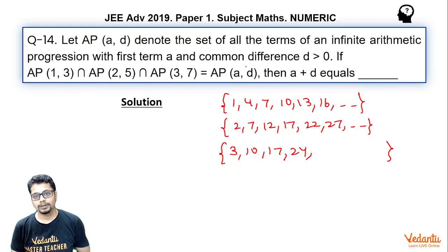Now this D essentially would be LCM of common differences of these three APs which is essentially 3, 5, 7. So LCM of 3, 5, 7 turns out to be 105. Now how is that?